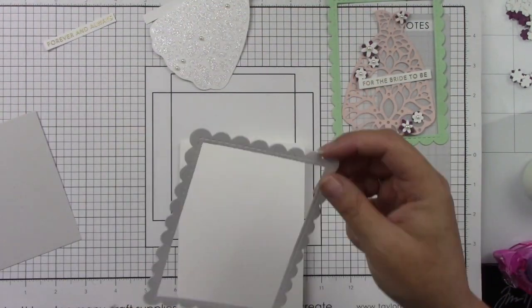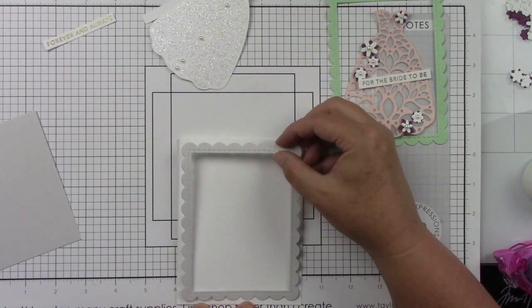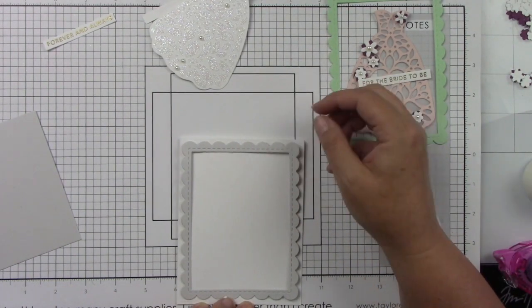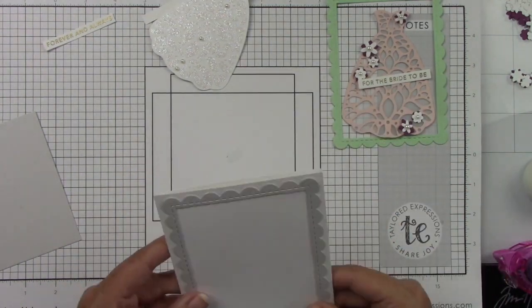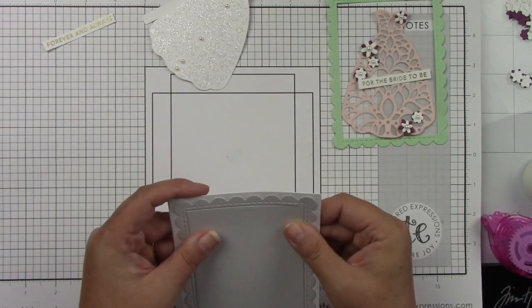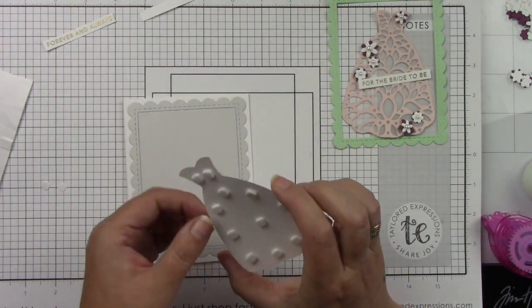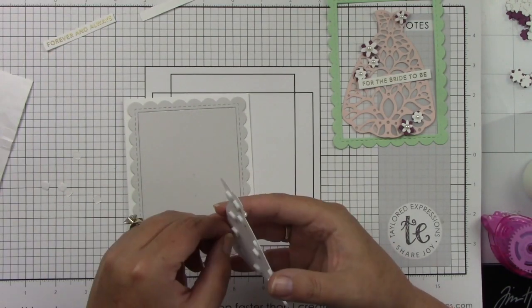So I have my white A2 size card bases. I added some tape runner to the Sea Salt frame here and I'm just going to center that. And then I'm going to center the other piece right in the middle there, just fits right in.